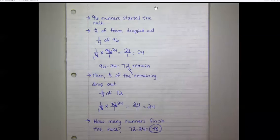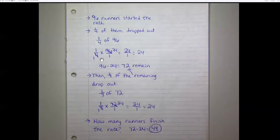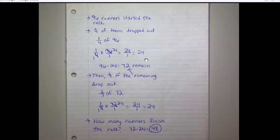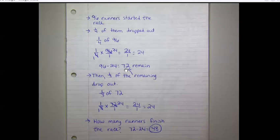96 runners started the race. A fourth of them dropped out — one-fourth times 96 over 1. Cross cancel because 4 will go into both 4 and 96: 4 divided by 4 is 1 and 96 divided by 4 is 24. 1 times 24 is 24, and 24 over 1 is 24. Subtract to find how many runners remain: 96 minus 24 is 72.